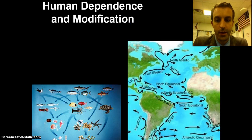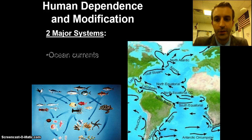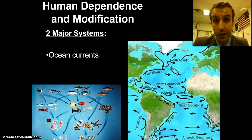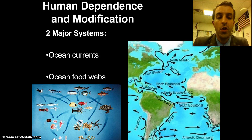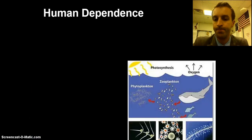The ocean is our friend — we depend on it for just about everything. There are two major systems we worry about. The first one is ocean currents, which serve to move energy around the earth, and then you have ocean food webs, which serve to provide nutrition as well as oxygen and a whole lot of other stuff that we use.